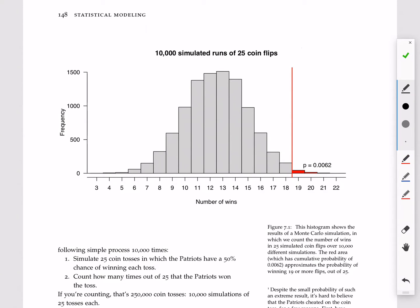For each of these 10,000 times, these two steps were taken. First, we simulated a 25-game stretch of coin tosses. That simulation assumed that the Patriots had a 50% chance of winning each coin toss.